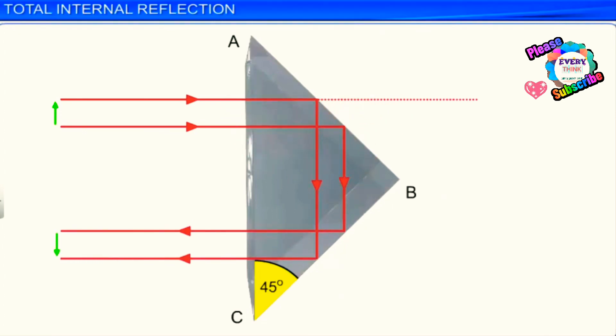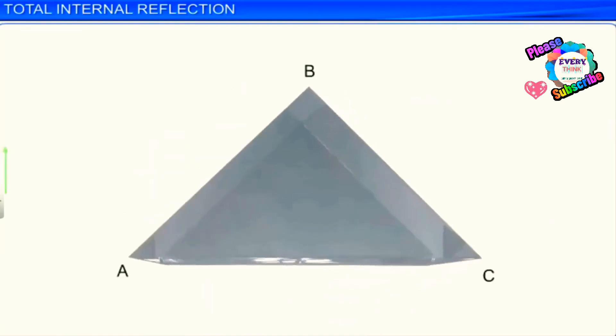In this case, the image of an object gets inverted. The same prism can also be used to obtain an inverted image of an object without changing its size.